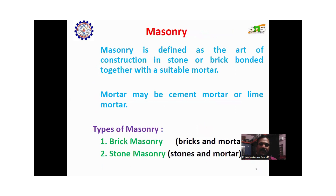Now we are going to see Masonry. Masonry is defined as the art of construction in stone or brick bonded together with a suitable mortar. Mortar may be cement mortar or lime mortar. Types of Masonry: